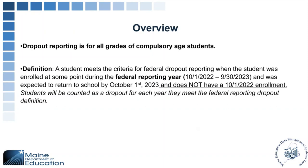Dropout reporting is required for all grades of compulsory age students. The definition of a dropout is a student who was enrolled during the federal reporting year from 10-1-2022 to 9-30-2023, and is expected to return to school by October 1, 2023. If they do not come back on that 10-1 date, then they are going to be considered a dropout on the federal report.